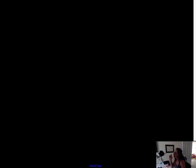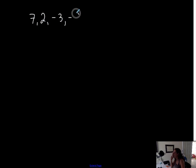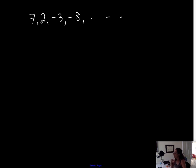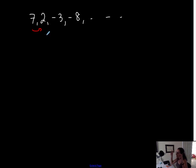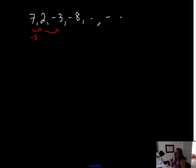One more example. Let's assume I have the following sequence: 7, 2, negative 3, negative 8, and so on. So this is a sequence. Now you're not going to be told that it's arithmetic — you're going to have to look at it and recognize the constant pattern. You can multiply, divide, or subtract to get from one term to the next. Let's see: I'm subtracting 5. Let's see if that stays consistent for the rest of this sequence.